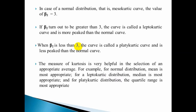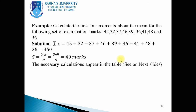So, dear students, in this video lecture we have discussed three measures of the data: skewness, moments, and kurtosis. Now, to discuss moments, we will calculate the first four moments about the mean for the following set of examination marks: 45, 32, 73, 46, 39, 36, 41, 48, and 36.